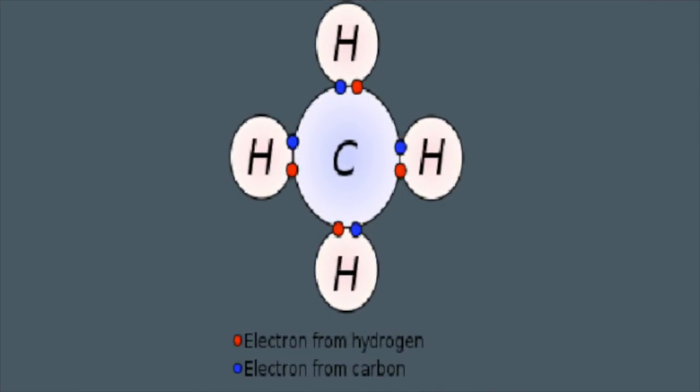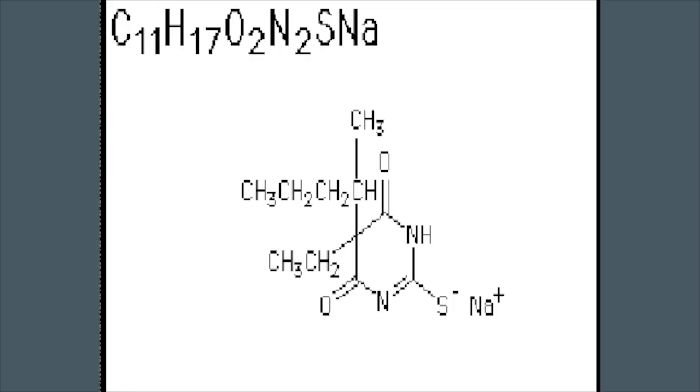Covalent bonds occur between two nonmetals, and here the electrons are shared. This is so both elements can satisfy the octet rule and have a full outer valence shell. A covalently bonded unit is a group of elements all bonded together covalently. In methane, the four hydrogens each share two electrons with one carbon, so the octet rule is satisfied for each atom. In sodium thiopental, two such units exist.